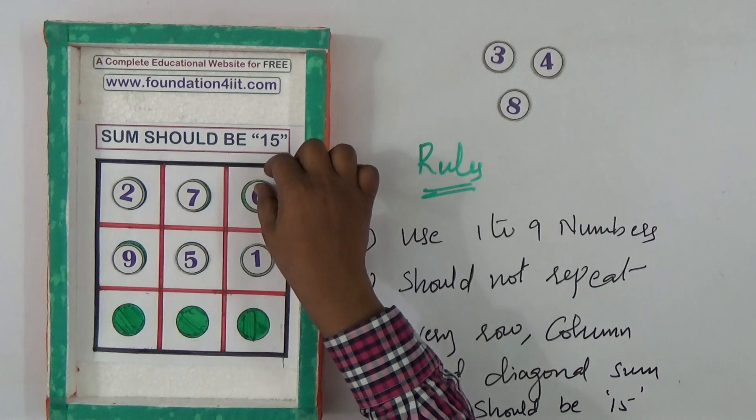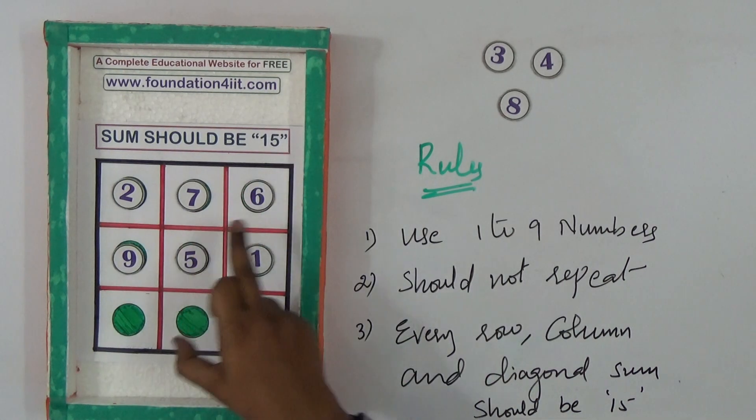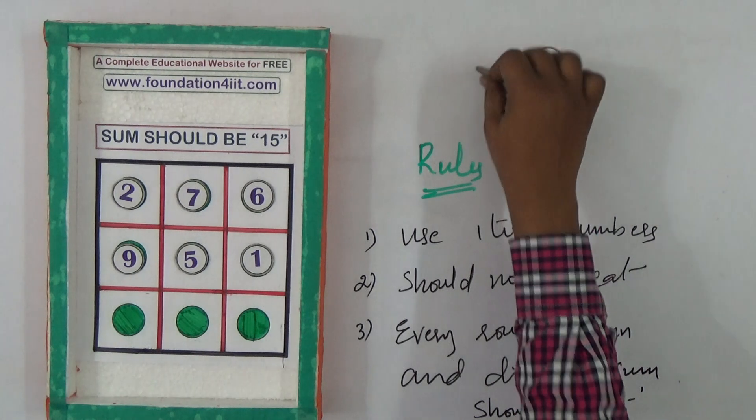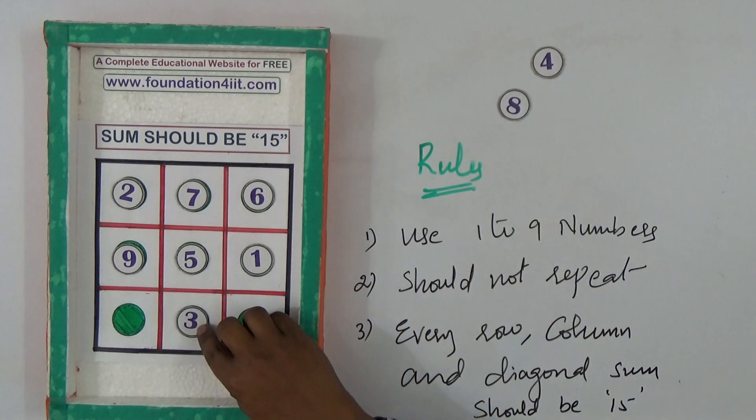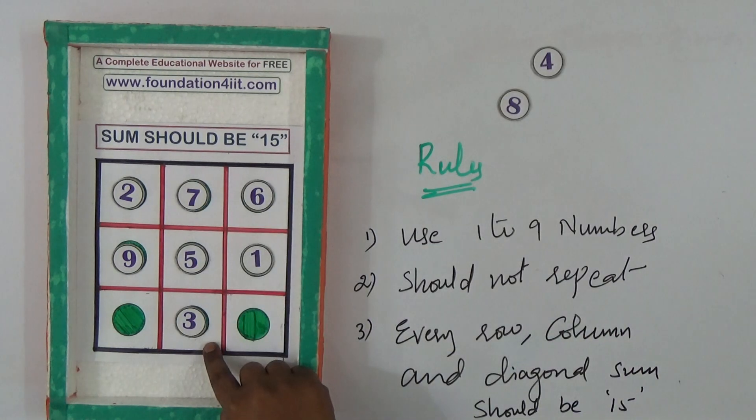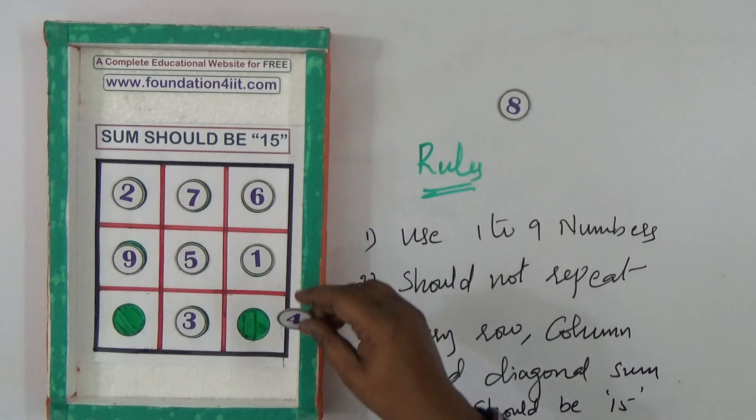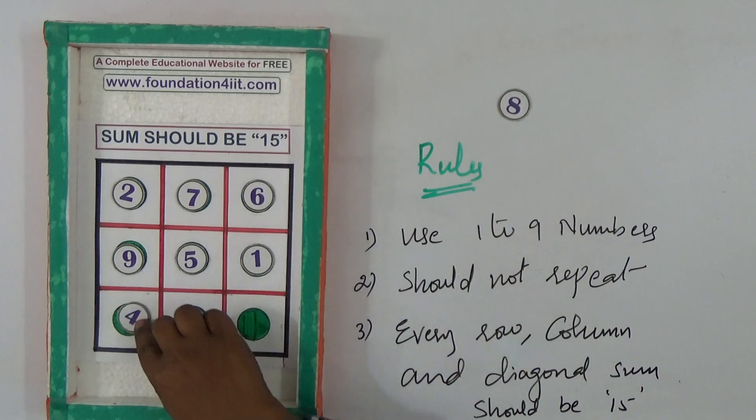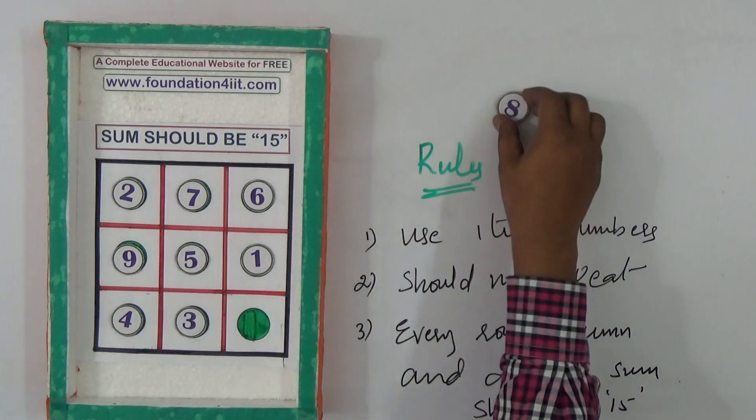2 plus 7 is 9, 9 plus 6 is 15. The remaining, keeping 3 here, because 7, 5, 3 is 15. This row. And 4 I should keep here because 2, 9, 4 is 15.